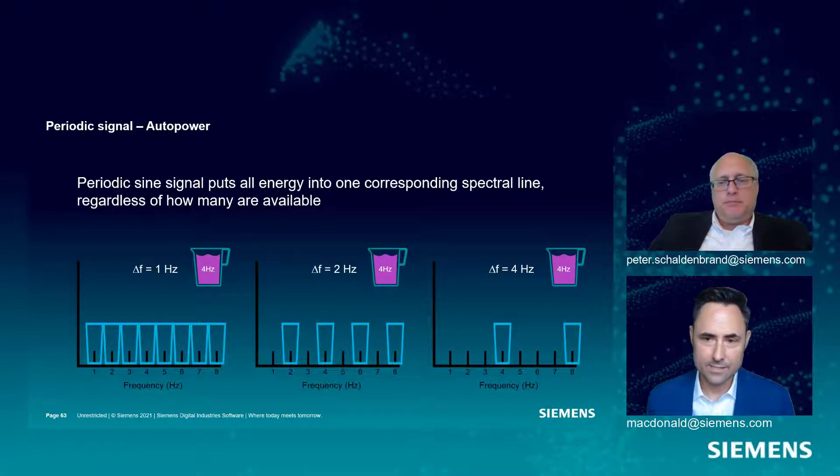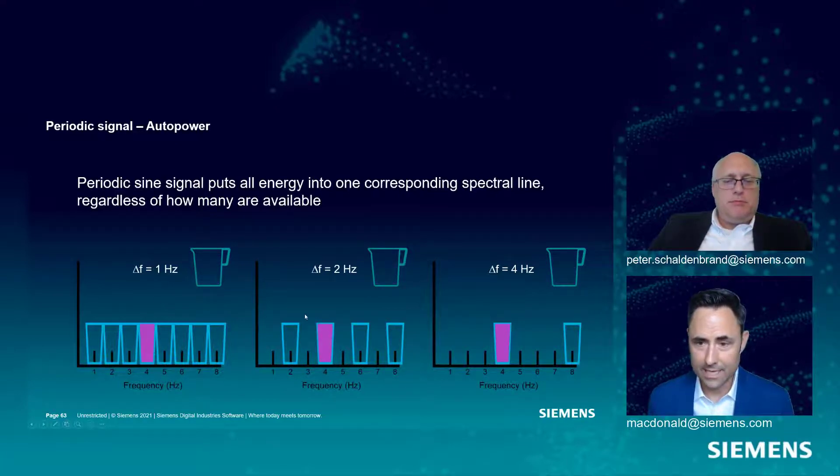In this case, we don't care if there's a number of different glasses available. Because the periodic sine wave, four hertz, is only going to be going to the four hertz spectral line in each of these cases. There's only one frequency here. So it only uses one of the glasses. And so they all end up identical.